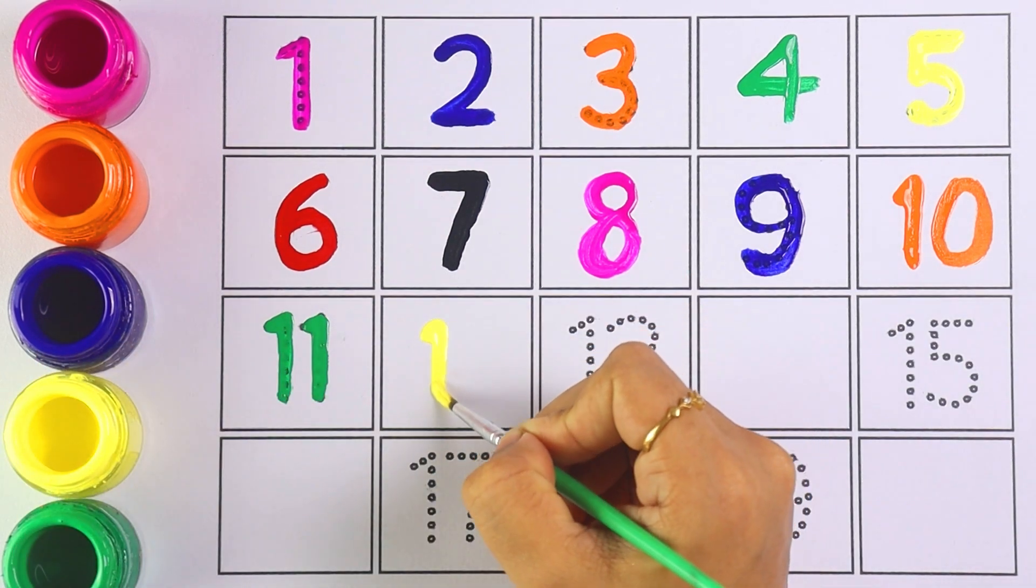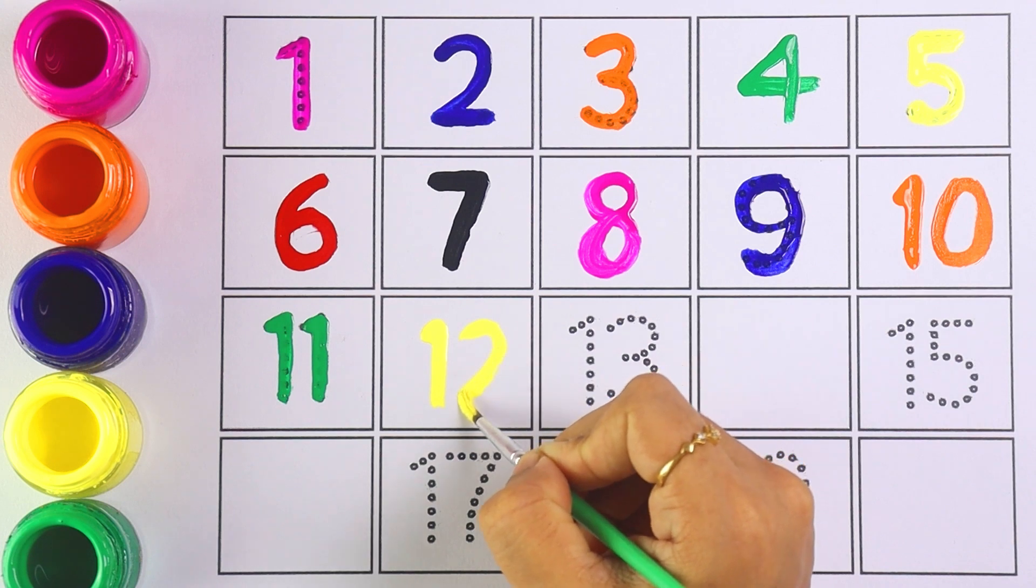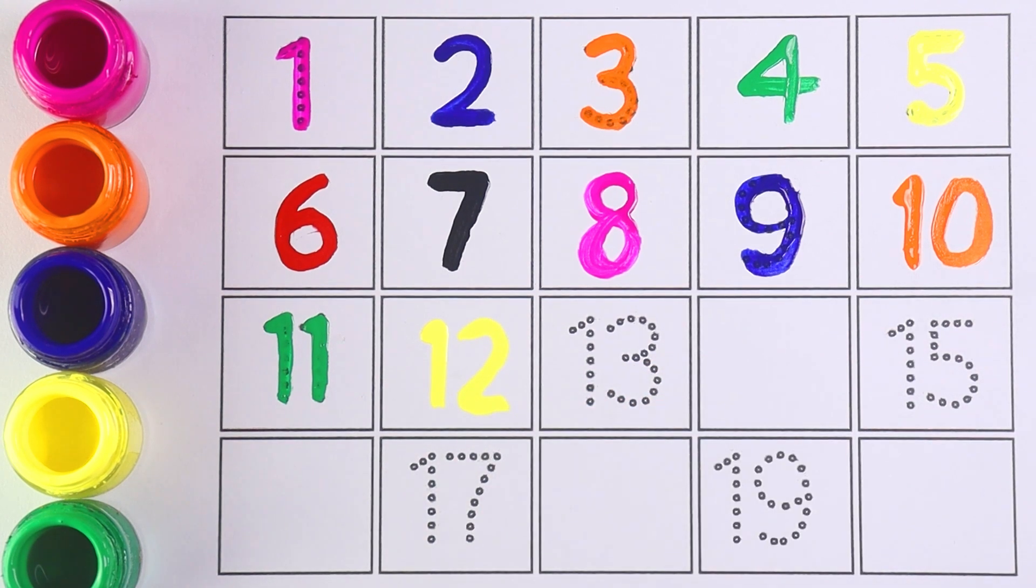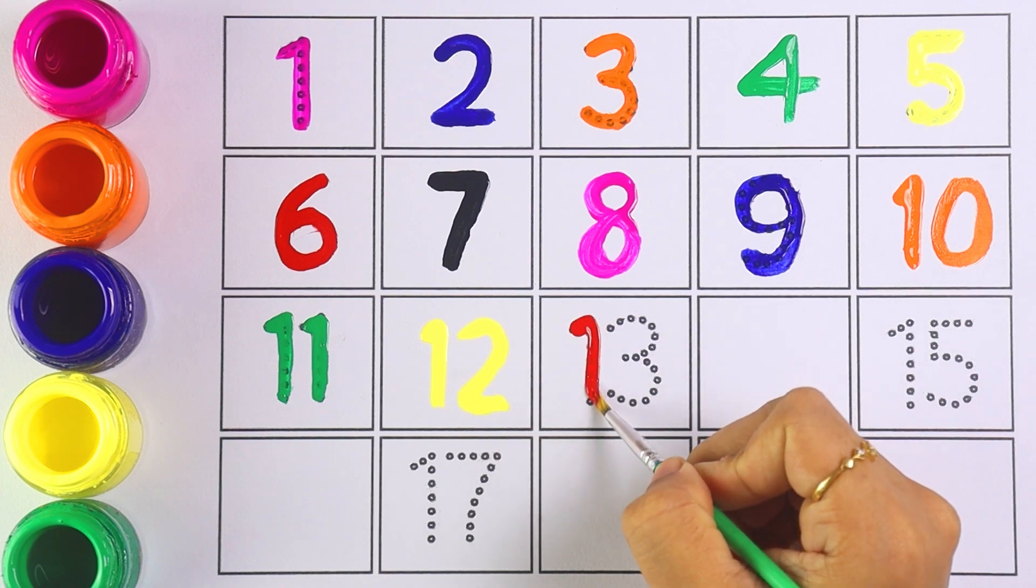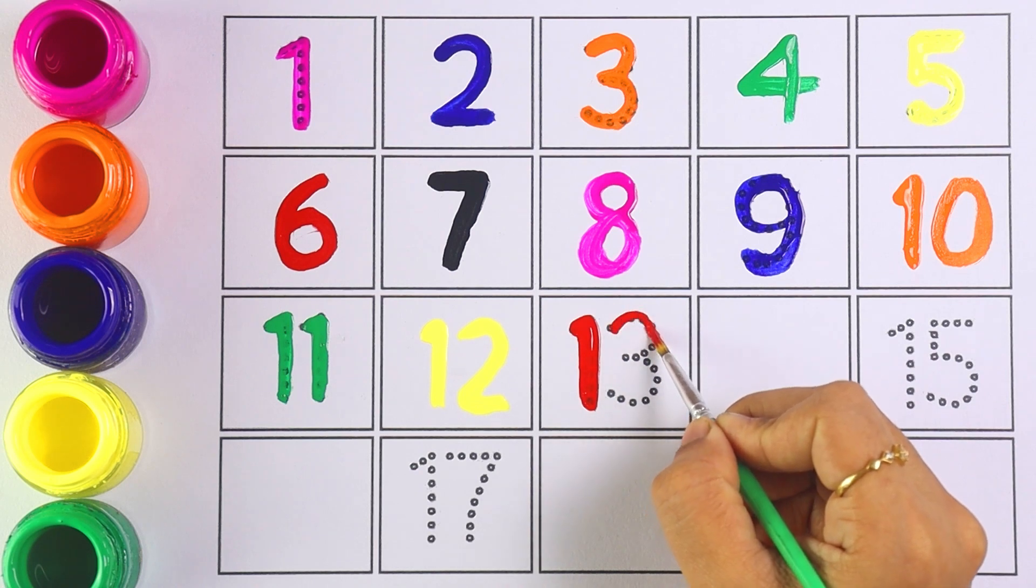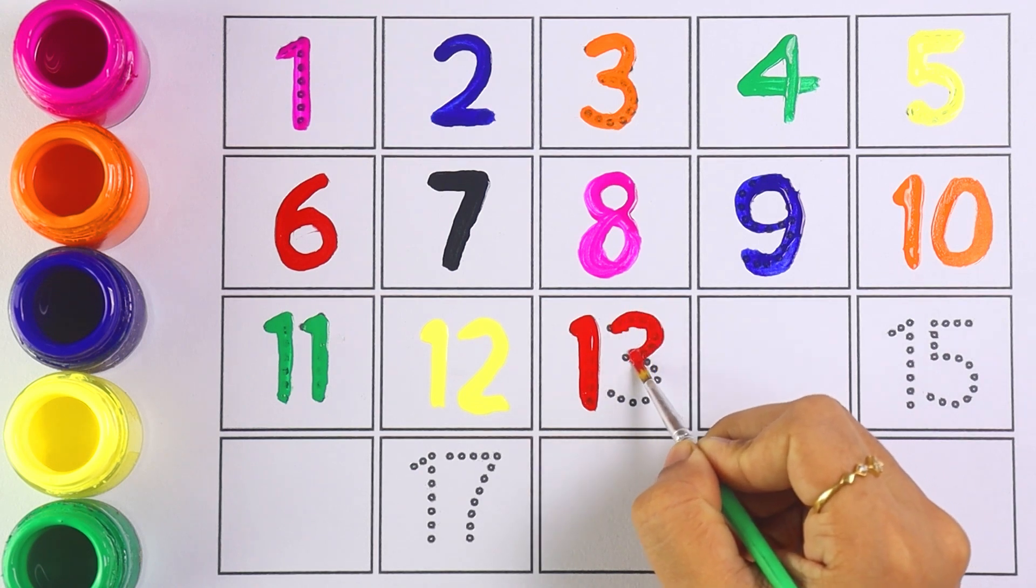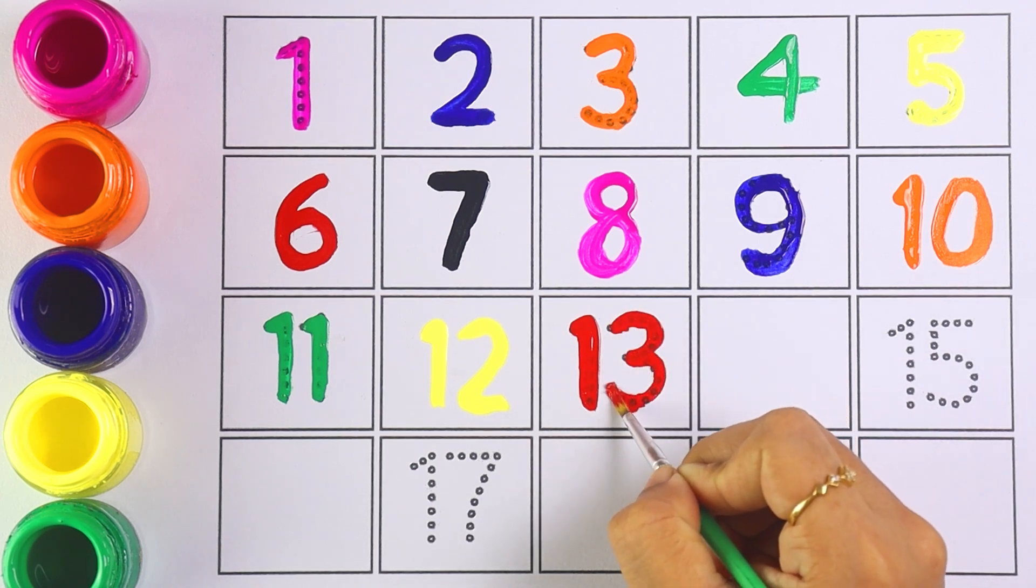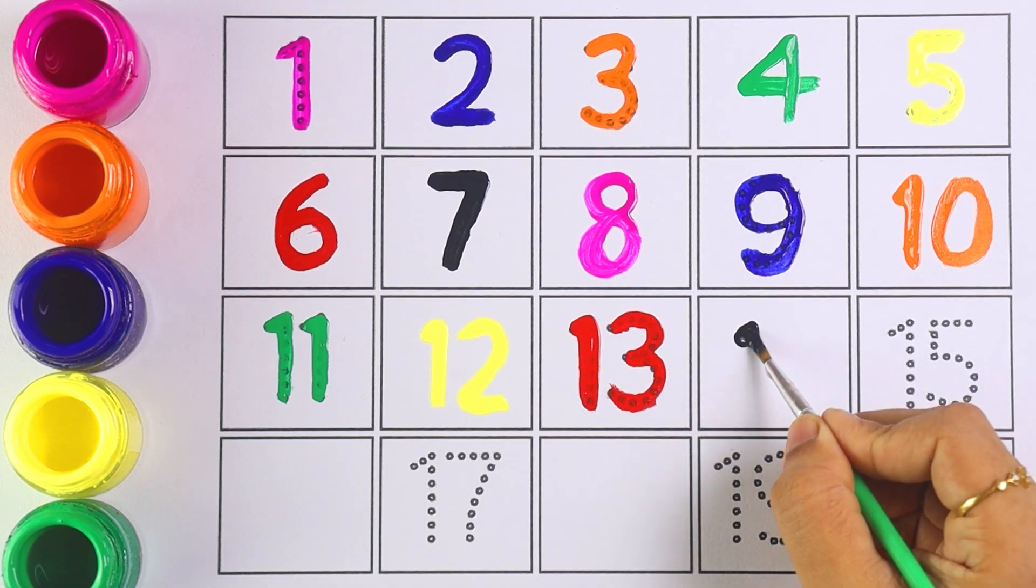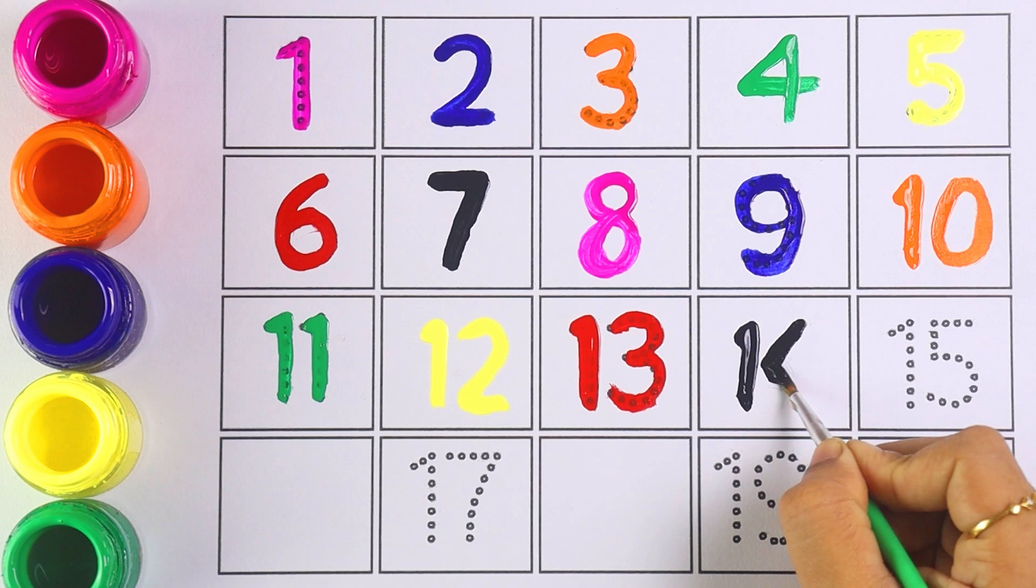Number twelve, number twelve. Number thirteen. One and three makes the number thirteen. Number thirteen.